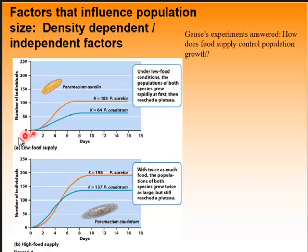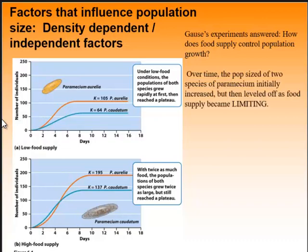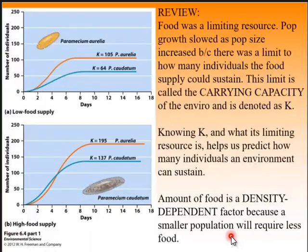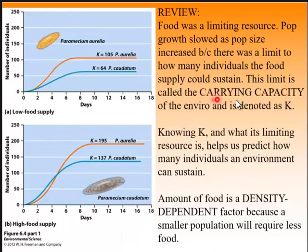This is about Gauss's experiment — food supply controls population growth. One species is going to win. The most important piece: the amount of food is a density-dependent factor. If you don't remember carrying capacity (K) and the importance of K, pause and read. Food is a density-dependent factor.